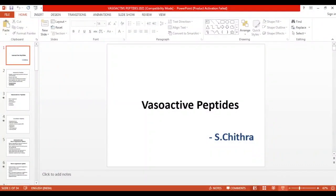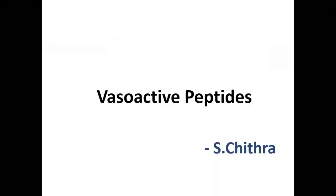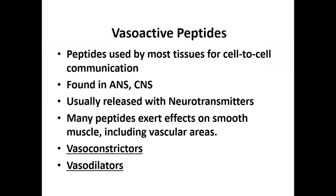For today's session, we are going to see about vasoactive peptides — what they are and the various types. Vasoactive peptides are peptides used by most tissues for cell-to-cell communication. They are usually found in the ANS and CNS and are usually released with neurotransmitters. They have effects on smooth muscles as well as other vascular areas. Vasoactive peptides are of two types: vasoconstrictors and vasodilators.